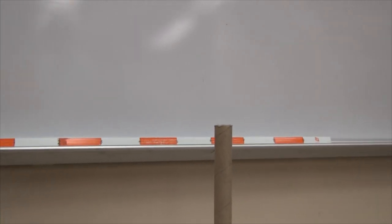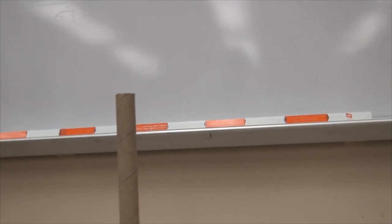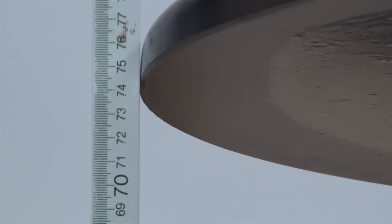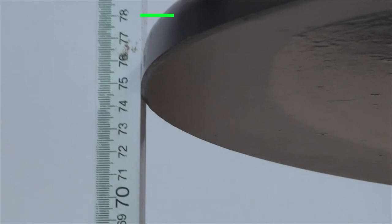The meter reading changes if we look from the left side or the right side, so we are careful to avoid parallax wherever possible. When reading the height of the tabletop, parallax is not avoidable because there is a space between the ruler and the table.